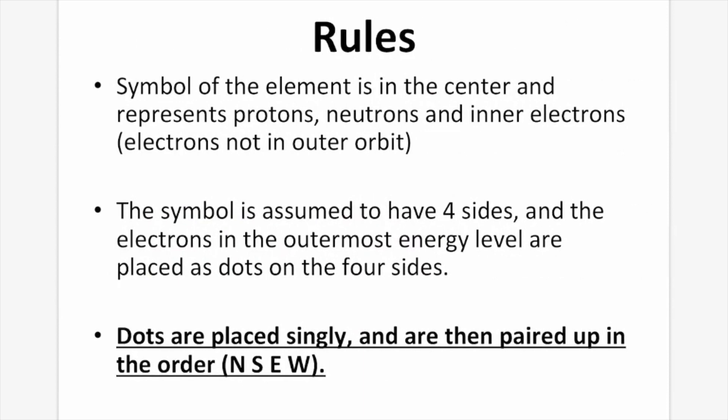So how do we draw our Lewis structure? First, we put the symbol of the element in the center, and this represents our protons, neutrons, as well as our inner electrons — the electrons not in the outer orbit. The symbol is assumed to have four sides, and the electrons in the outermost energy level are placed as dots on those four sides. Dots are placed singly, and are then paired up in the order of north, south, east, and west.